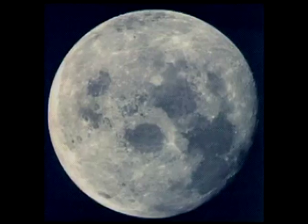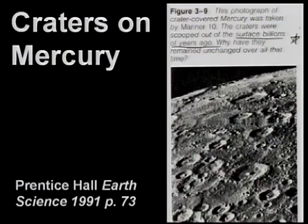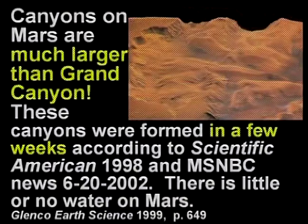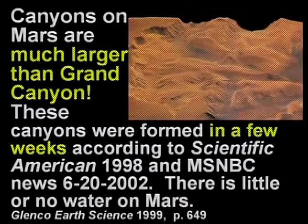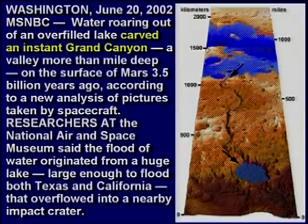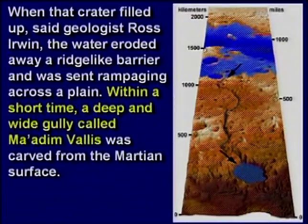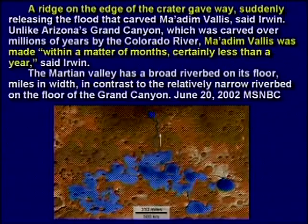The moon has craters on it, but we never see the moon get struck by anything. Even Mercury has craters. Mars has a canyon much larger than the Grand Canyon. When scientists studied this canyon on Mars, they said it formed in a matter of weeks — they found evidence of melting water in one of the craters that overflowed the rim and washed out the canyon very quickly. So why can you look at a canyon on Mars and say it formed quickly, but look at the Grand Canyon on Earth and not conclude that water formed it very quickly?